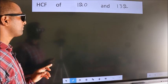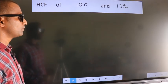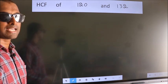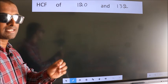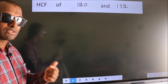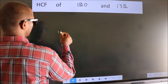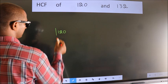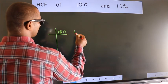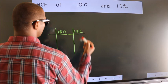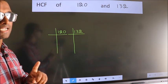HCF of 120 and 132. To find the HCF, we should do the prime factorization of each number separately. 120 here, 132 here. This is your step 1.